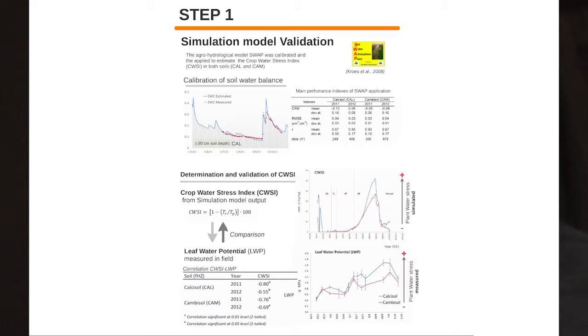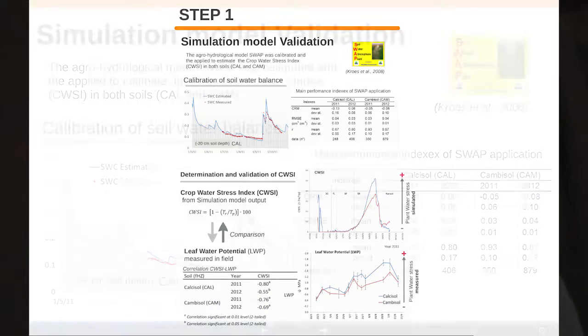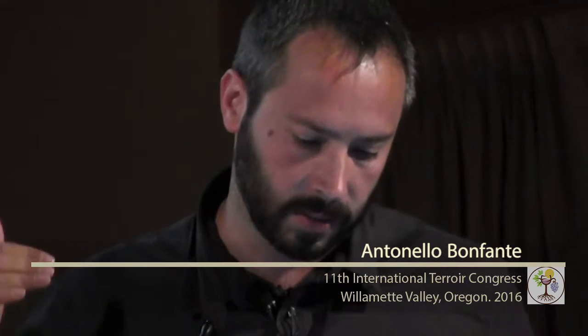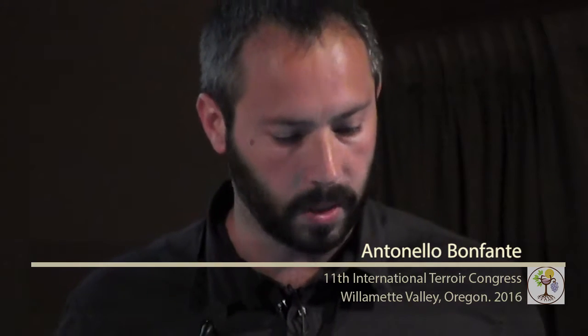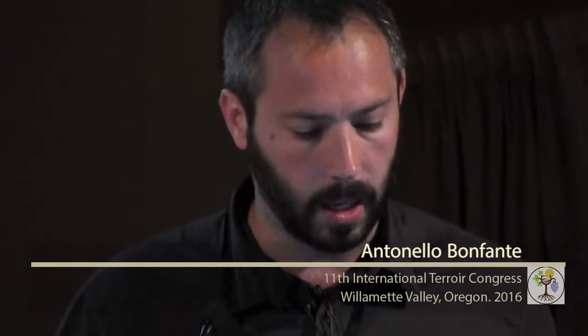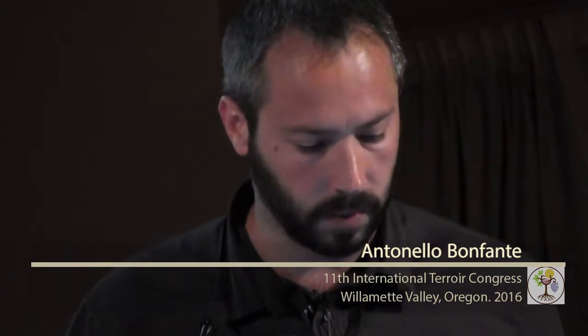Let's look at the first step of this procedure. The model scope was calibrated and validated for two years, 2011 and 2012, for the soil water balance. This figure shows how we performed the calibration across the first 1 meter, at different soil depths, comparing soil water content estimated by the model against field measurements. The model showed good agreement between estimated and measured data.